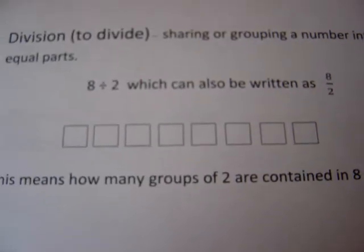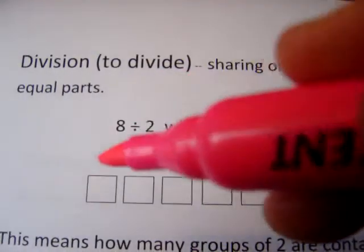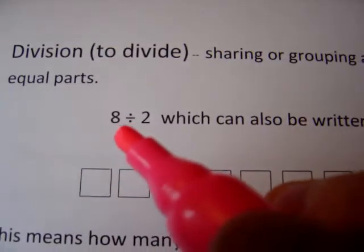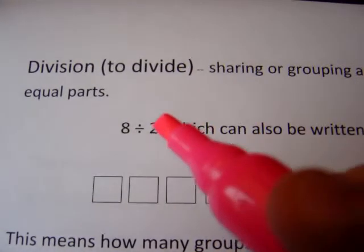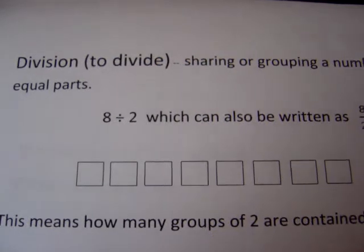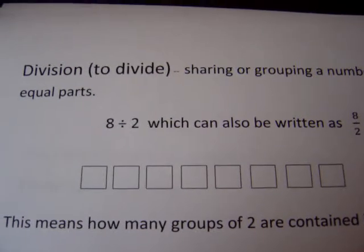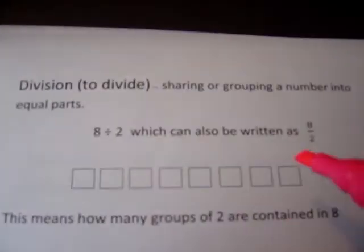I've drawn out 8 objects, 8 rectangles, and I'm going to take these 8 objects, 8 being the dividend, and divide by groups of 2, 2 being the divisor. The result we get is the answer called the quotient.